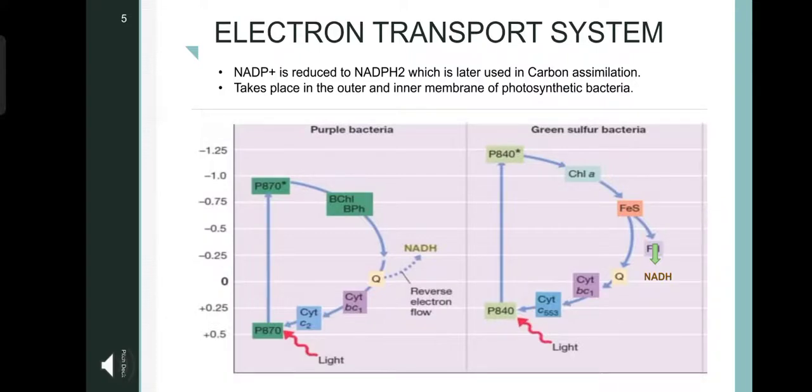Electron transport system. It is the first step in the photosynthesis where NAD plus is reduced to NADH2, which is later used during the carbon assimilation. This process takes place in the outer and inner membrane of the photosynthetic bacteria. In the purple sulfur bacteria, first the light energy is trapped by the reaction center P870. From this, the excited electrons pass through a series of electron carriers, namely bacteriochlorophyll, bacteriopheophytin, quinone, and after reduction of quinone, the electron slowly moves through the cytochrome BC1 and cytochrome C2 complex and finally enters into the reaction center.